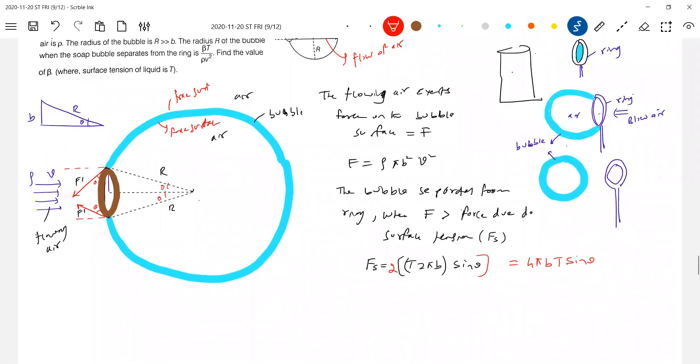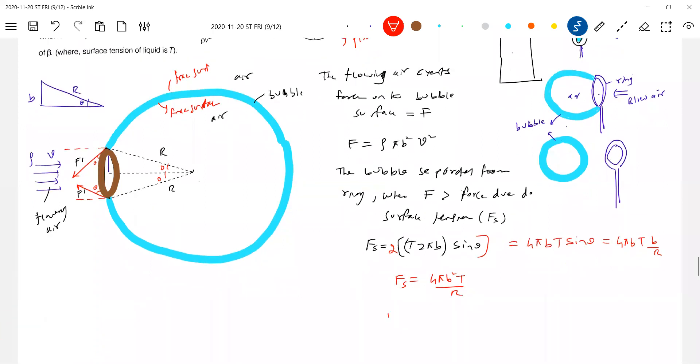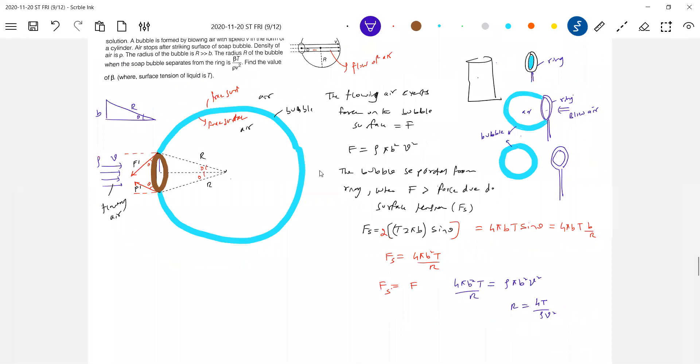So therefore, now we equate. We don't know theta. So shall we write sine theta as B by R? Let's equate these two forces. F is equal to, then what is Fs? 4 pi B square T by R is equal to rho pi B square into V square. So expression for R will be 4 T by rho V square. When the radius of the bubble becomes equal this much, it will lose contact from the ring.